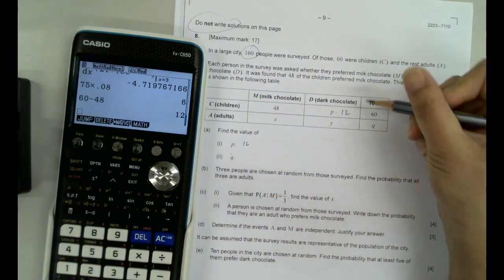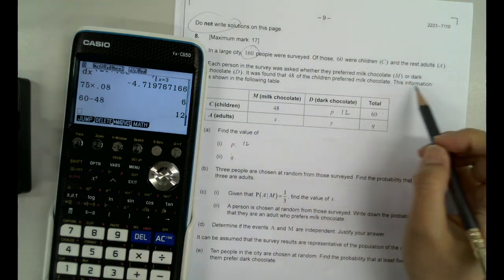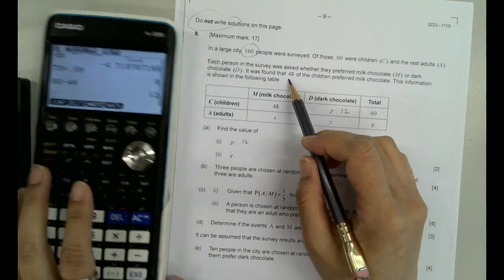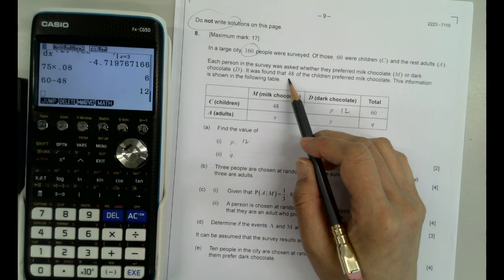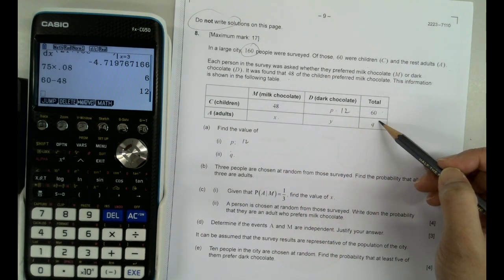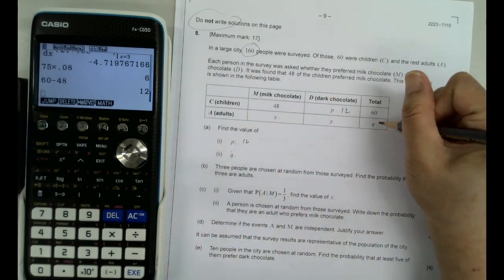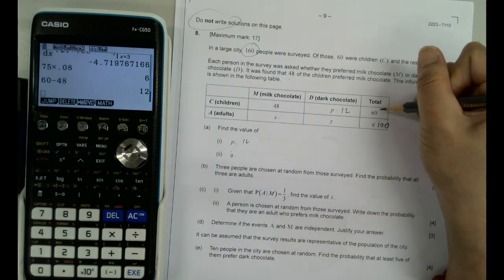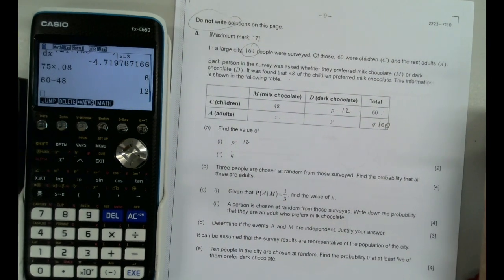And Q, we have the dark chocolate. Let's see, 48 children preferred normal chocolate. And we got total, we got 160 here. So Q has to be 100. All right, does it make sense to you?